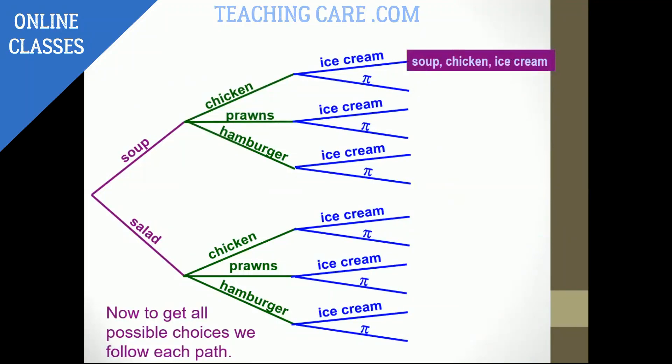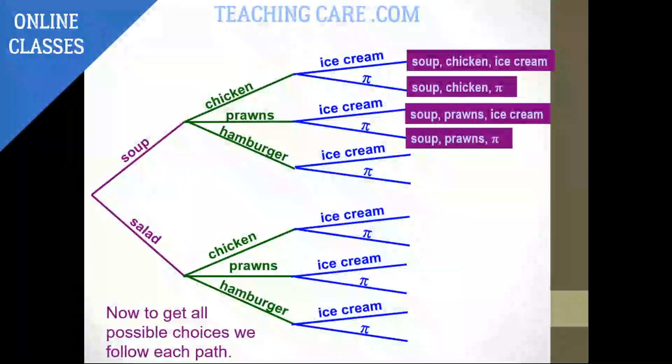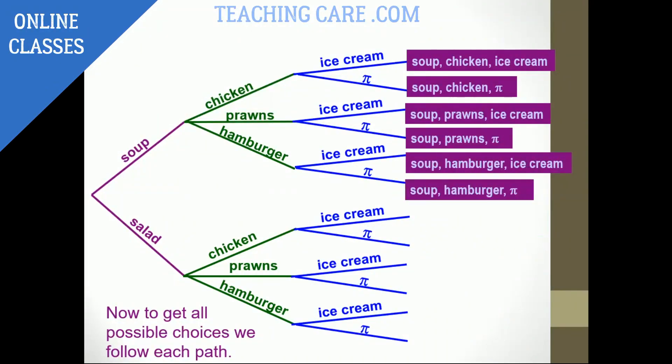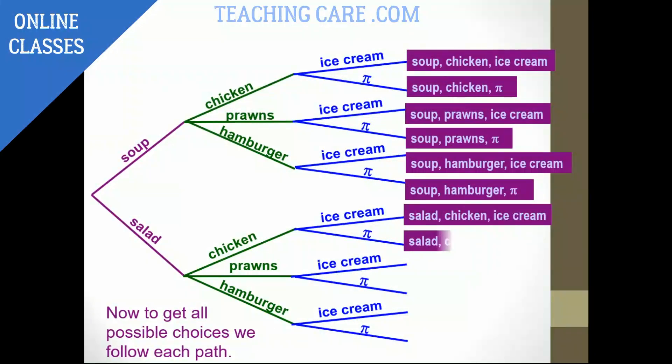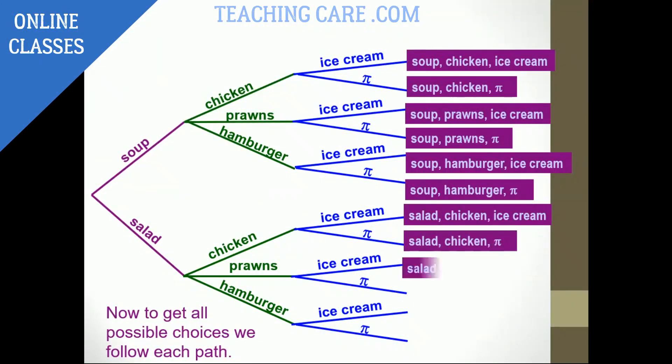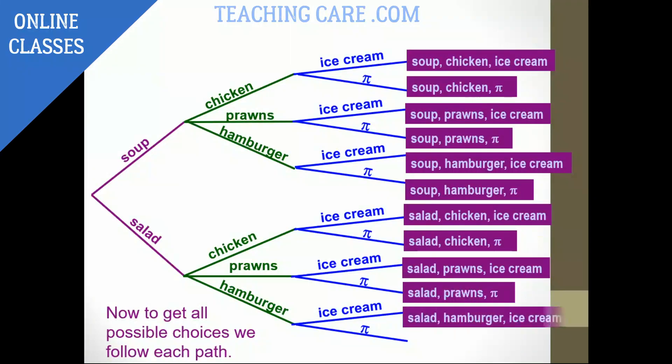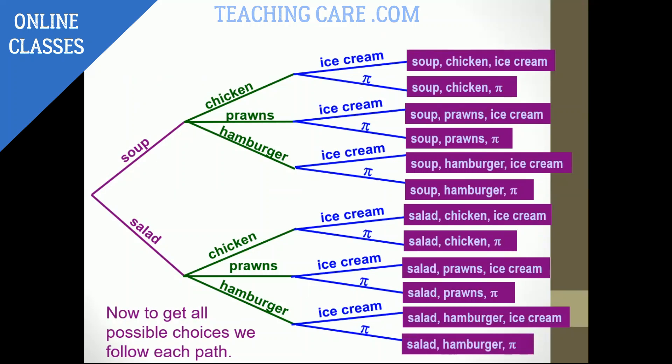So how I'm going to make the choice? I can go for soup, chicken, ice cream or soup, chicken, pie. Soup, prawns, ice cream. Soup, prawns, pie. Otherwise soup, hamburger, ice cream. Soup, hamburger, pie. Or salad, chicken, ice cream. Salad, chicken, pie. Salad, prawns, ice cream. Salad, prawns, pie. Salad, hamburger, ice cream. Salad, hamburger, pie.